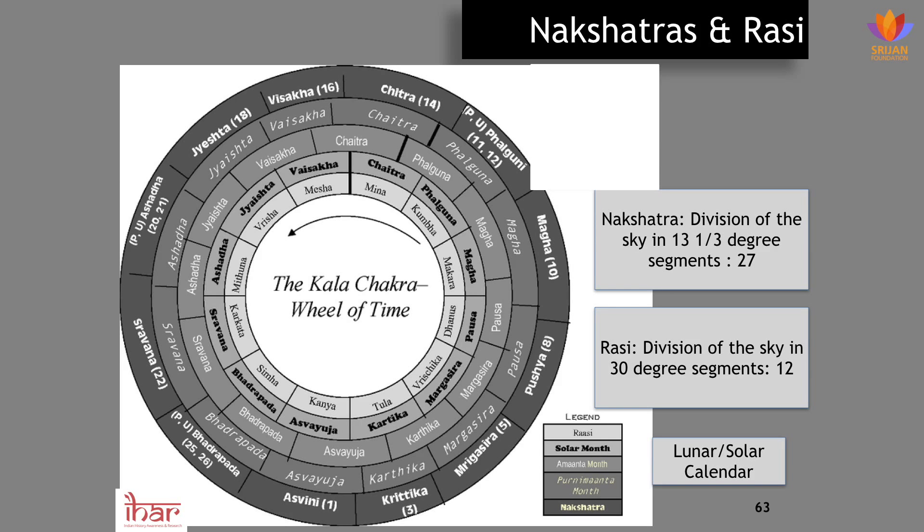We need to first set the stage. What was the Indian astronomical model? The model was one of nakshatras and rashi. Our ancient Indians divided the sky into several segments of 13 and 1/3 degrees. They started from the eastern horizon and said, let me divide the first 13 and 1/3 into the first nakshatra.